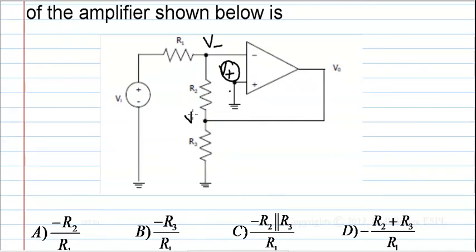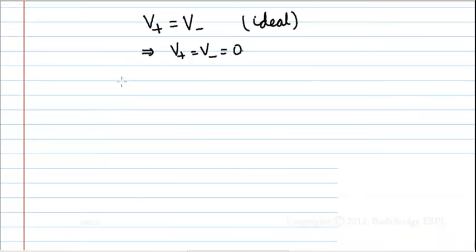Also the voltage at this node is V naught, since it is the same branch. For finding a solution, we need to apply KCL at this node, so applying KCL at that node